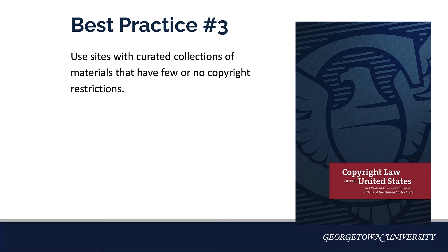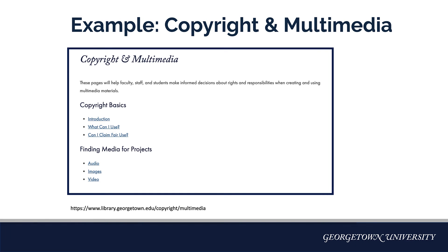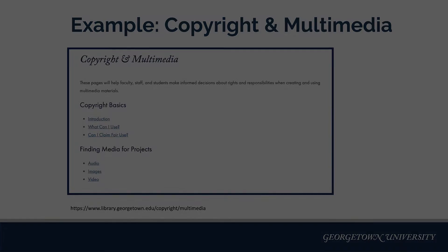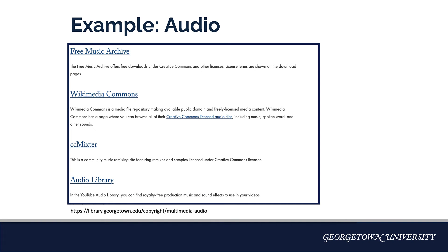Use sites with curated collections of materials that have few or no copyright restrictions. One example of such a site is the library's copyright and multimedia page. You can use the links for audio, images, and video to find lists of sites with Creative Commons or public domain materials for use in your project. Once you've found suitable materials, be sure to check the license and verify that it applies to your project.